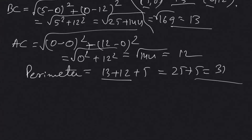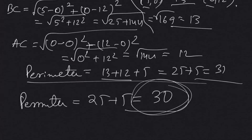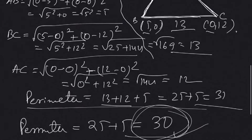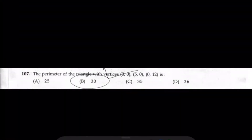So the perimeter equals 5 plus 13 plus 12, which is 25 plus 5 equals 30. The answer is option B.